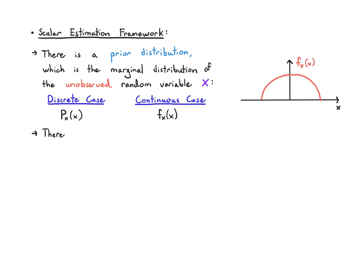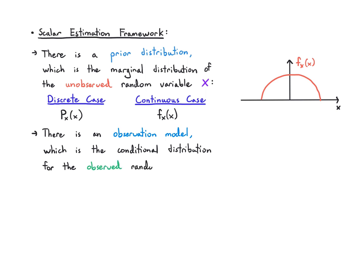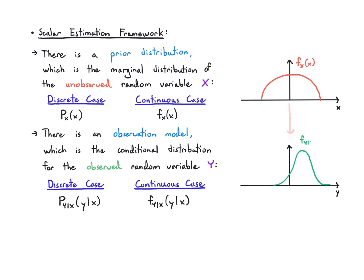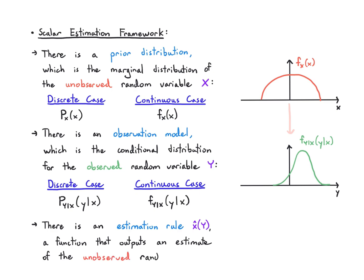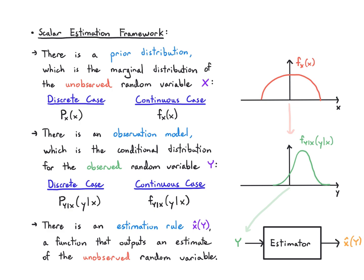There's also going to be an observation model — that's how the observation y is generated conditioned on x. The distribution of y given x is a conditional PMF in the discrete case, or a conditional PDF in the continuous case. Finally, our job is to come up with an estimation rule x̂(y): a function of y that outputs an estimate of x. We use x̂ so it's clear this thing is meant to predict x, and the y in parentheses means it's a function only of y.